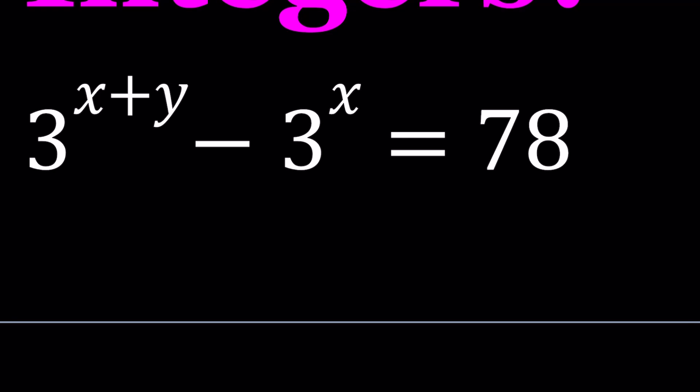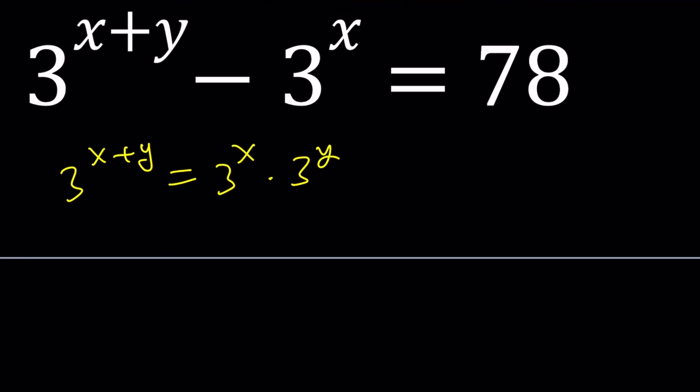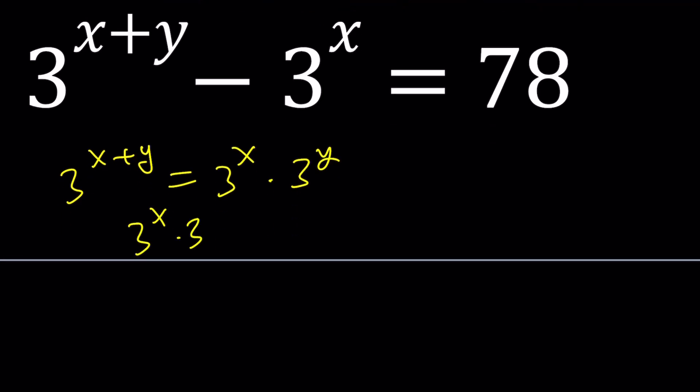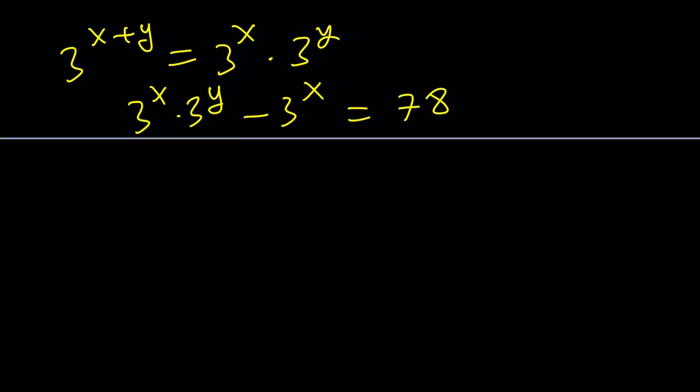Now, here's what we're going to do. We're going to factor this expression. First of all, 3 to the power x plus y can be written as 3 to the x times 3 to the y. And if you write it that way, 3 to the x times 3 to the y minus 3 to the x, 3 to the x becomes a common factor. So we can factor it out. When we do, we get 3 to the x times 3 to the y minus 1 equals 78.